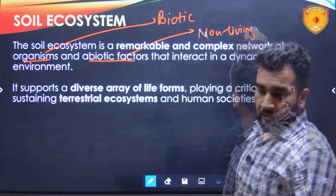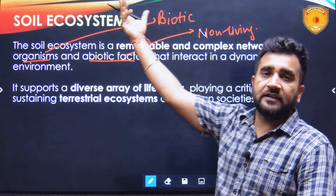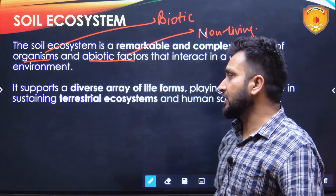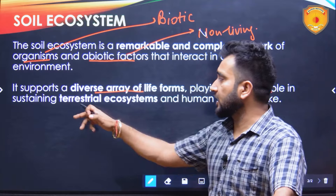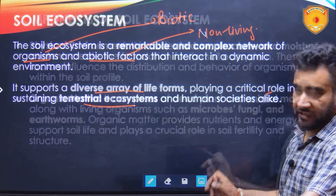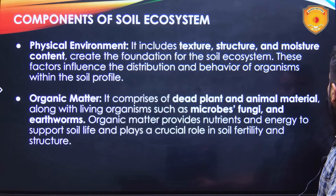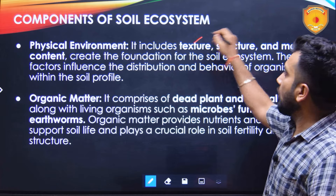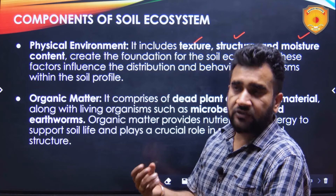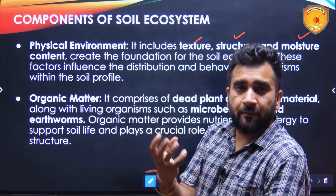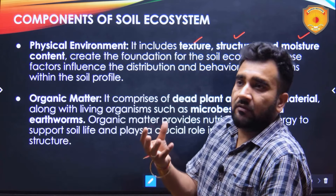The soil ecosystem is basically a remarkable and complex network of organisms and abiotic factors. Organisms are biotic and abiotic factors means non-living factors. How they interact with each other actually determines the health of the soil ecosystem. It supports a diverse array of life forms, playing a critical role in sustaining terrestrial ecosystems and human societies. The first component is the physical environment — the texture, structure, and moisture content of the soil.